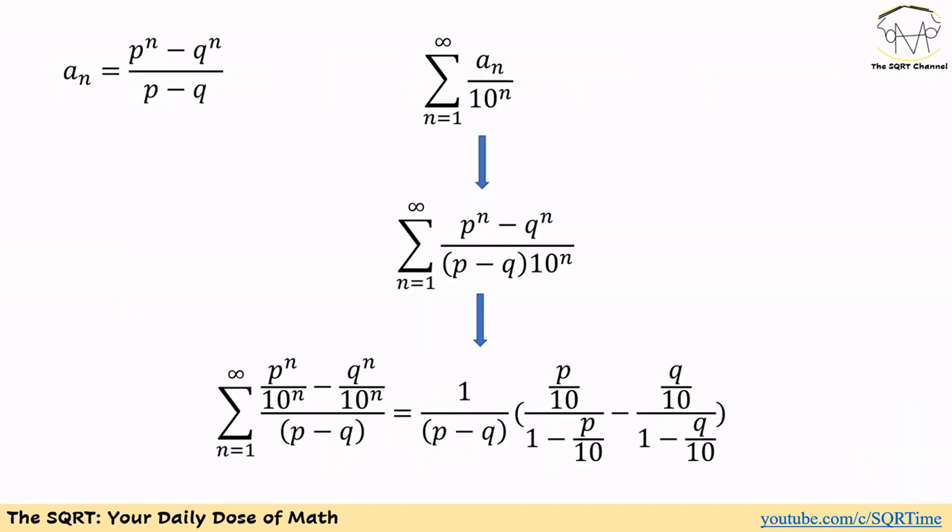To solve this problem, let's review the equation again. We have a general term defined as a_n equals P to the power of n minus Q to the power of n over P minus Q, and we want to find the Sigma of a_n over 10 to the power of n, for n equal to 1 to infinity. Let's start by replacing a_n with P to the power of n minus Q to the power of n over P minus Q.